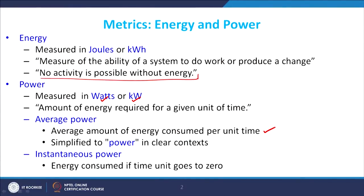To reduce power, either you reduce the total energy output or you reduce the time frame over which the energy is released. The average amount of energy consumed per unit time is defined as average power. Total power, which we will refer to throughout these lectures, is the sum of static power, dynamic power, leakage power, and short-circuit power.